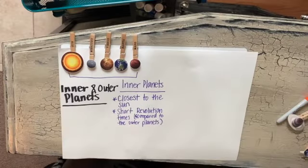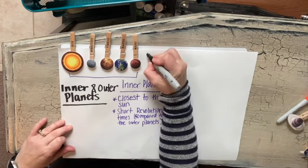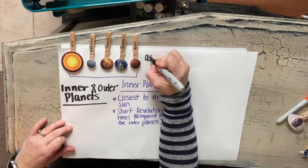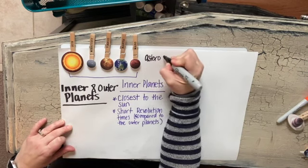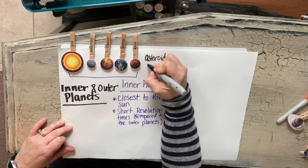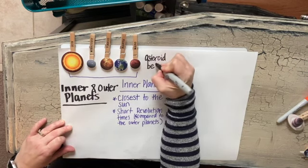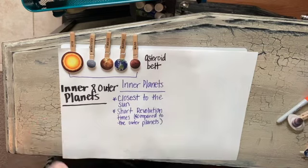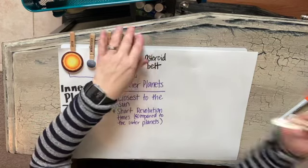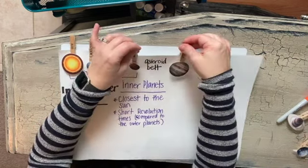Between our inner and outer planets is an asteroid belt. Asteroids are rock and iron objects that orbit the Sun, and millions of them are found between Mars and Jupiter — we call that the asteroid belt.